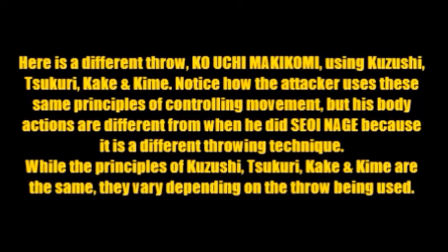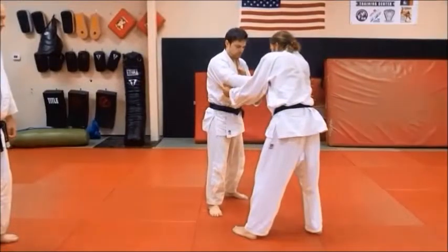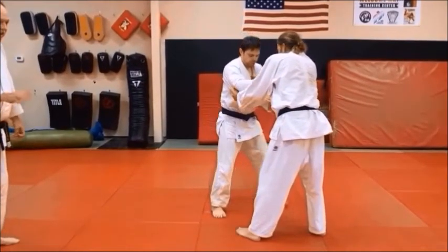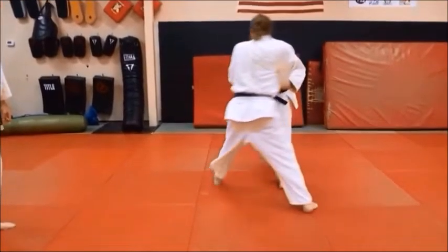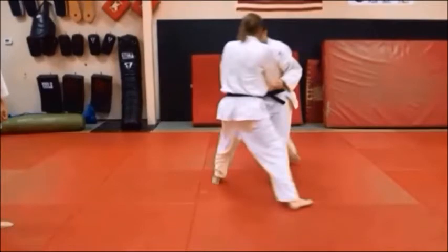Different throw: Koichi Maka Komi. It's obviously going to look different, but still the same four principles apply — Kazushi, Tsukure, Kake, and that fourth or third and a half principle of Kime. We break his balance and posture, just like before. In this case, suited to this particular throw, Derek's going to move Eric, spinning him about as you can see. He steps back — here's the movement phase — and he stops him.